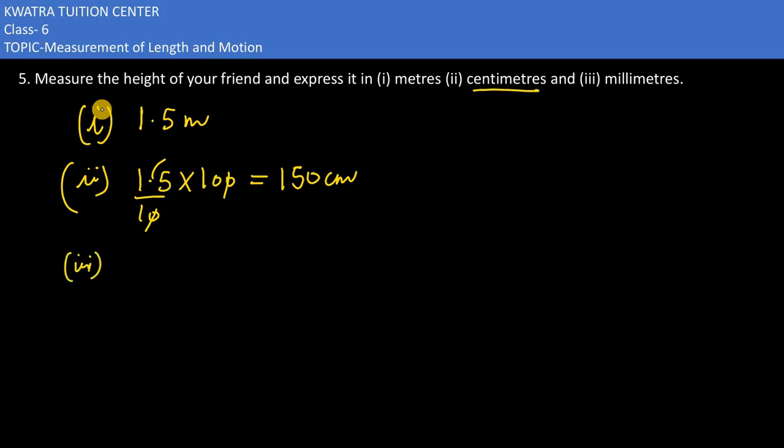In the third part, express it in millimeters. How do you do this? You have 150 centimeters, and you'll convert centimeters into millimeters. Centimeters to millimeters is nothing but multiplying by 10. So what will our value be? 1,500 millimeters.